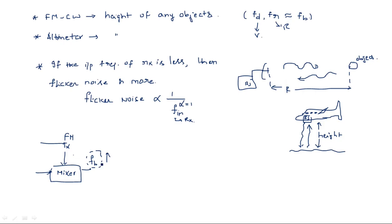We need to increase the beat frequency entering at the receiver input to reduce flicker noise. The same method used in the CW radar is applied here to improve the input signal frequency so that flicker noise can be separated. We are adding an intermediate frequency (FIF) to avoid this flicker noise. This is the background of the FMCW altimeter — why we are using the FMCW altimeter with intermediate frequency addition rather than the basic FMCW block diagram.